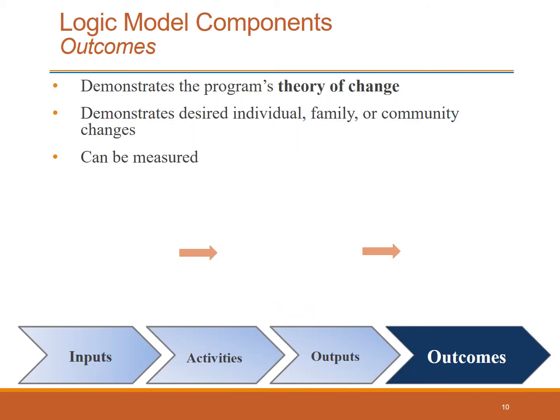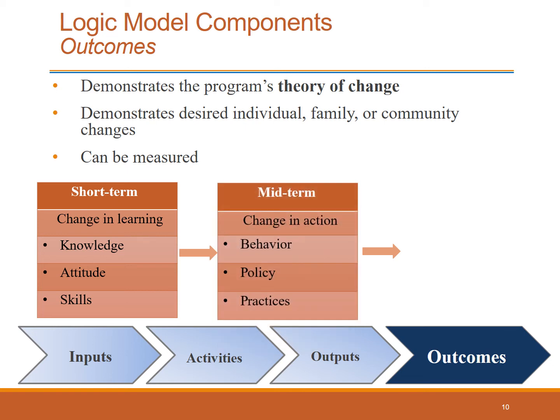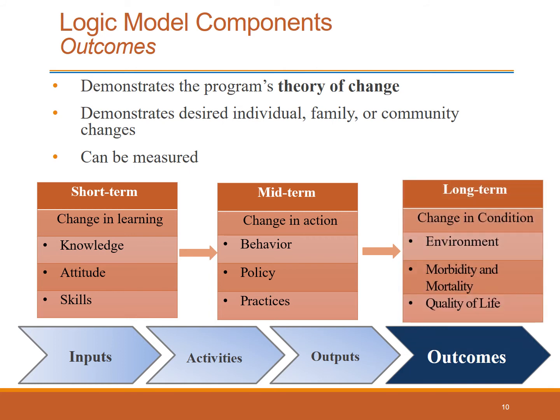Outcomes are the last section. We can break outcomes into short-term, mid-term, and long-term. These should demonstrate the program's theory of change and include each level of the ecological model you are targeting, such as desired individual, family, or community changes. Outcomes should be measurable. Short-term goals often include changes in learning, such as individuals' knowledge, attitudes, and skills. Mid-term outcomes are more likely to be changes in action or behavior, and may include policy or practice changes. Long-term outcomes are often the most difficult to measure — these are most likely changes in conditions of the environment, mortality or morbidity, and quality of life.